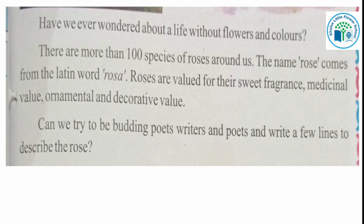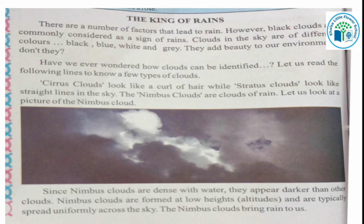The next activity is 'The King of Rain.' There are a number of factors that lead to rain — for instance, change of seasons. However, black clouds are commonly considered a sign of rain. When we see black clouds in the sky, we know rain is coming. Clouds in the sky are of different colors — black, blue, white, and sometimes gray.